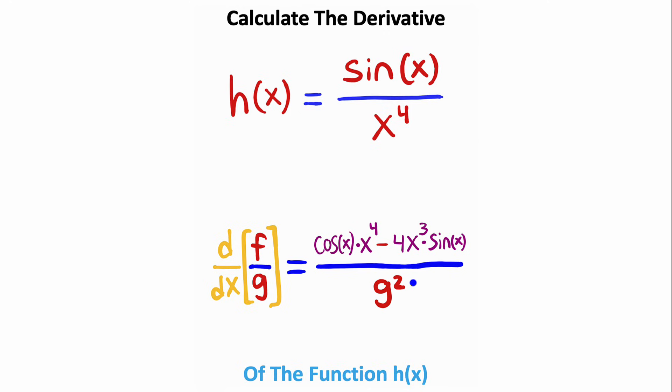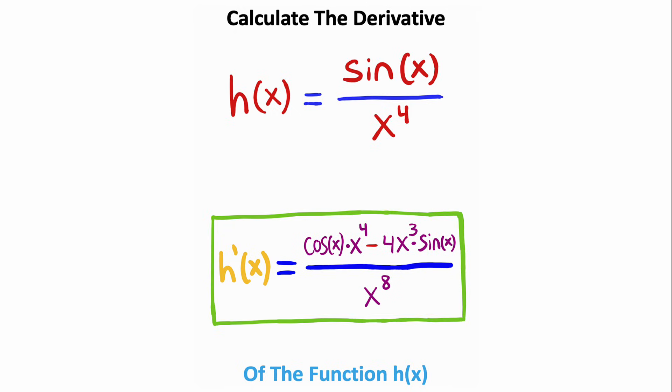Now, our last step is to divide this all by g squared. That's going to be the denominator squared, which is just x to the fourth squared. And x to the fourth squared, multiplying these two values, that's the same as x to the eighth. So this is the unsimplified derivative and the answer to the problem.